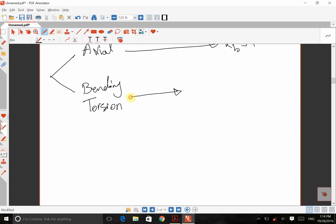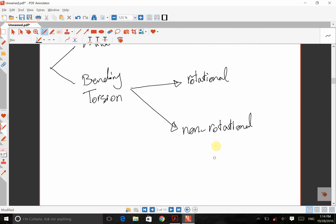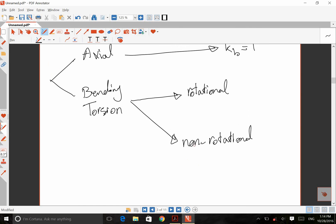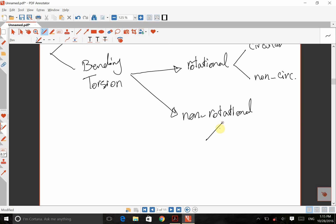Before I want to talk about the geometry, I'm going to divide this subcategory into two regions. One of them is the rotational situation and the other one is for non-rotational. Okay. In rotational, we can have circular cross-section and we can have a non-circular cross-section.